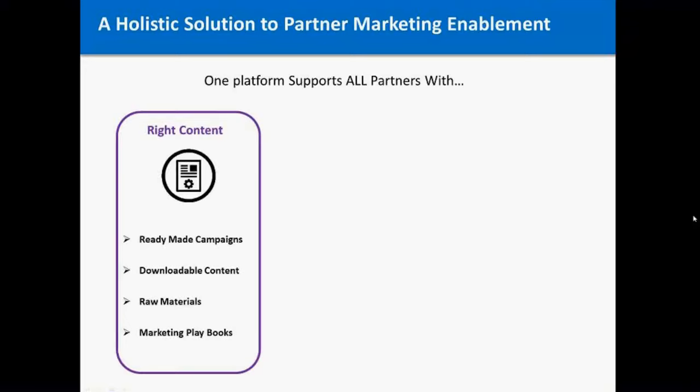First, let's look at providing partners with the right content. It's really important to make sure the content you're providing is available for your different tiers or types of partners to consume. For your mid-tier partners, what they really like to see are ready-made campaigns — all they have to do is go into a system, select the campaign they want to execute, and have their logos and contact information automatically brought into those marketing campaigns so they can just send it out. For your larger partners, what they like is downloadable content, raw materials, and marketing playbooks so they can digest the information you provide and use their own systems to send out marketing to their end customers.